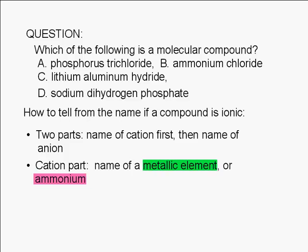We see this in choices C and D. Lithium and sodium are metallic elements. Therefore, the compounds in choices C and D are ionic compounds. The cation in choice C is the lithium ion. The cation in choice D is the sodium ion.